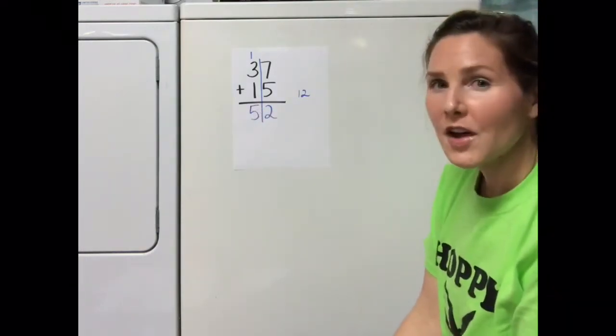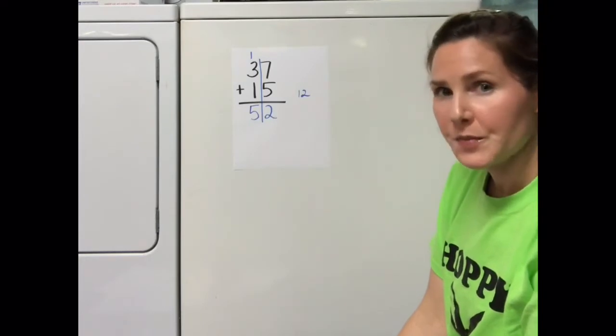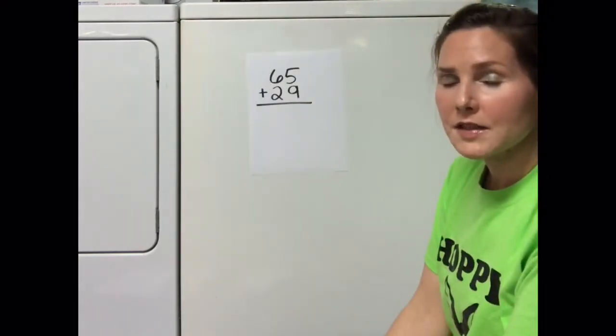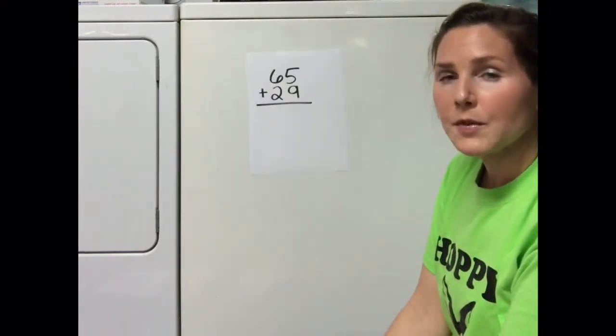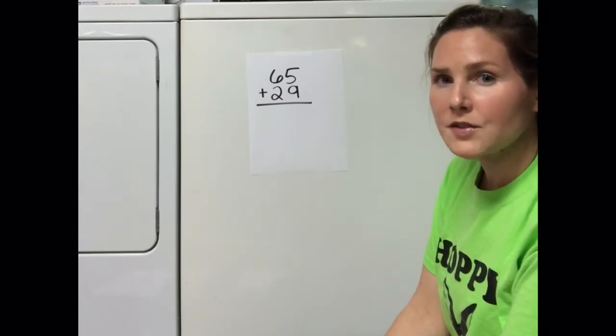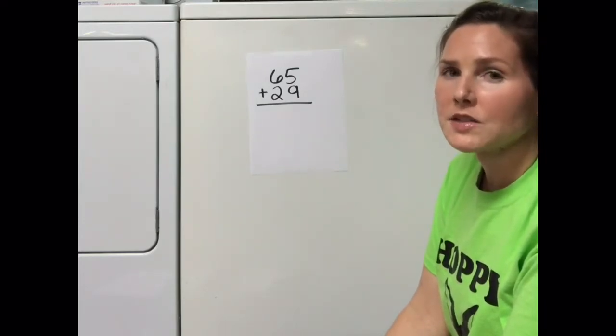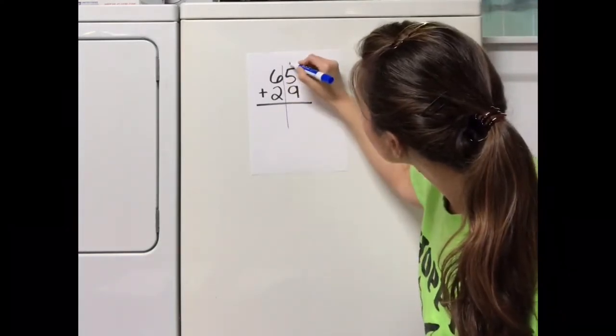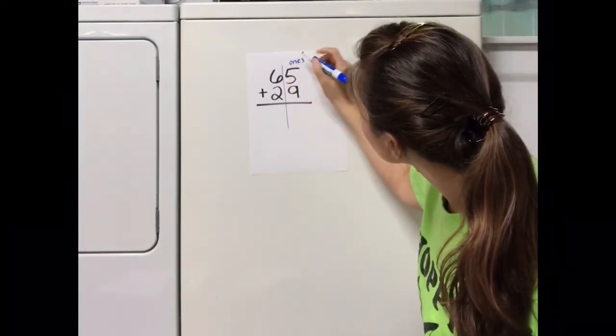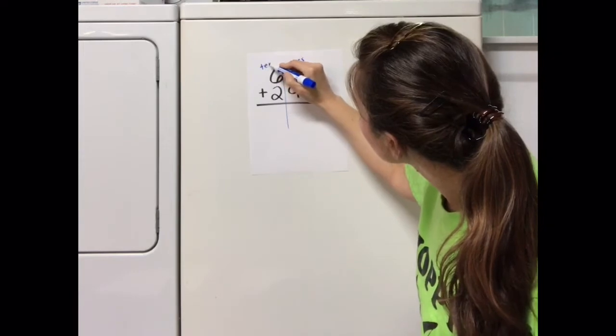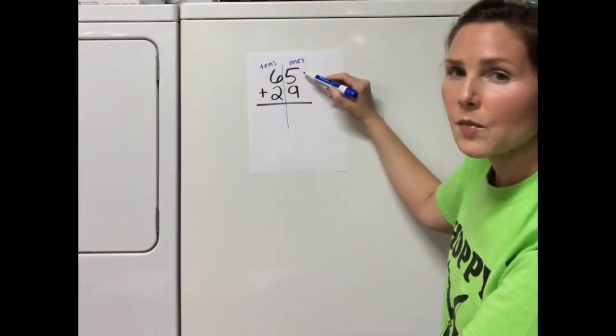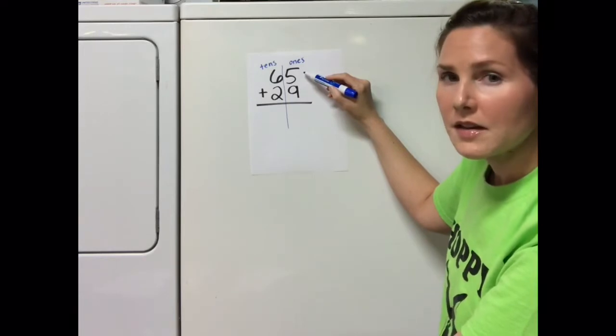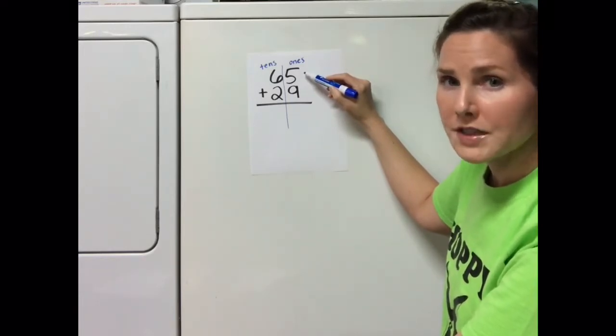This problem says 65 plus 29. I'm going to start by drawing a vertical line to divide my ones and my tens columns. In the ones column we have 5 plus 9. 5 plus 9 is equal to 14.